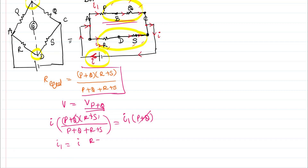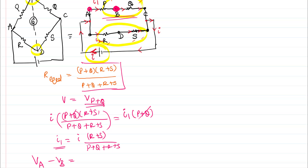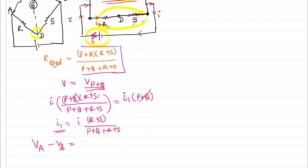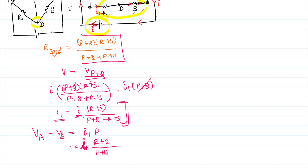Once I have I₁, I can write the potential difference between points A and B: Vₐ minus V_b equals I₁ times P. We have already calculated I₁, so substituting: Vₐ minus V_b equals I times (R+S) divided by (P+Q+R+S), multiplied by P.